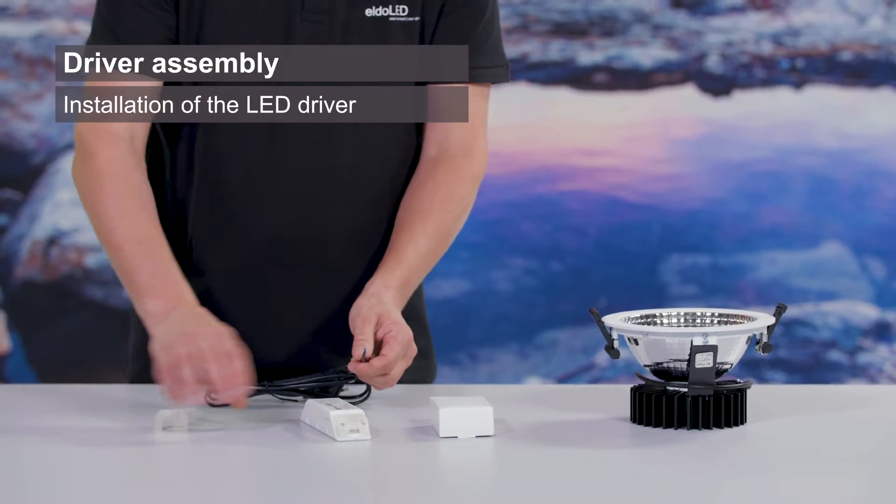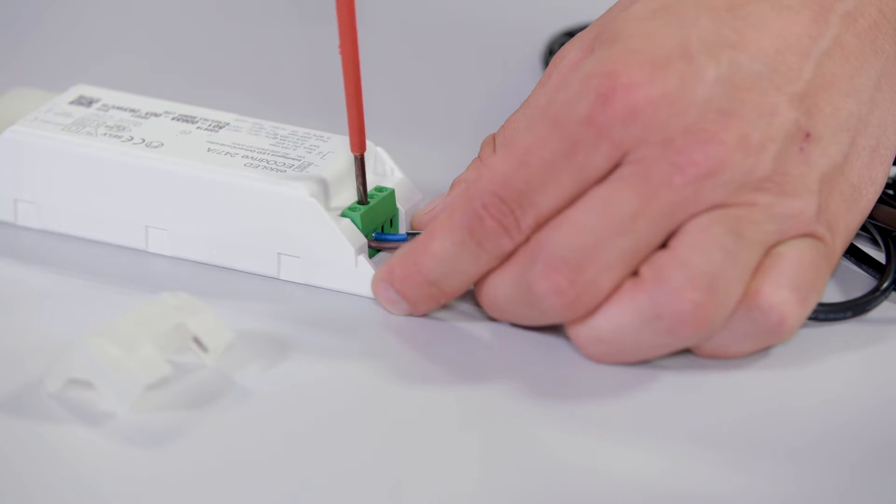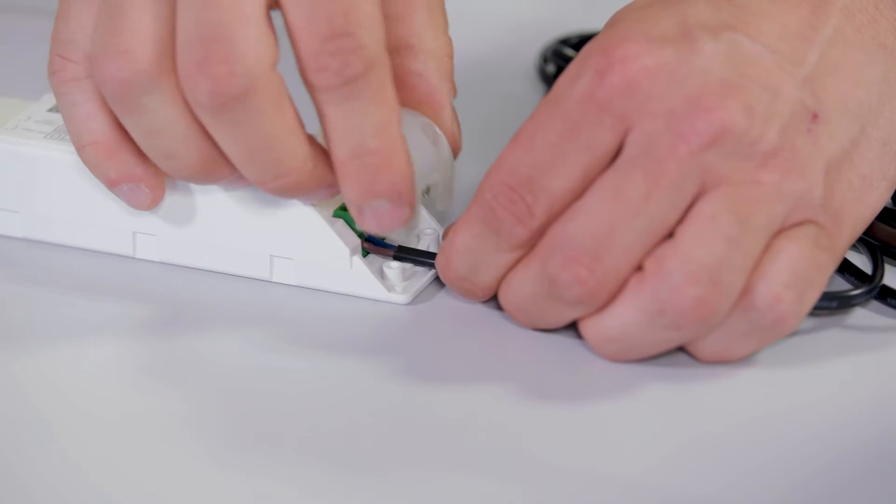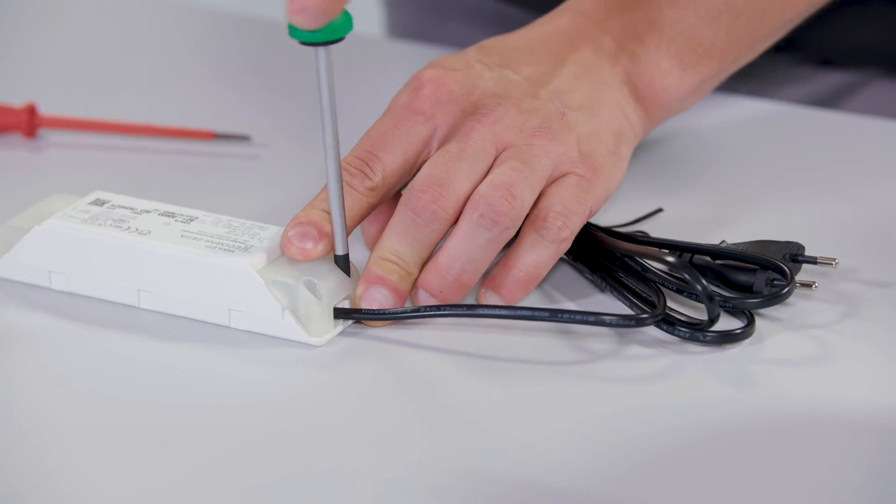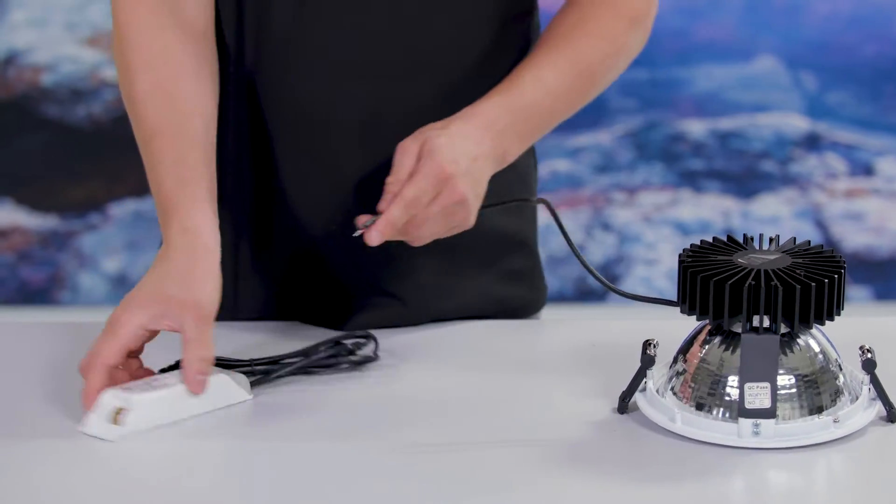Connect the power cable to the LED driver and mount the end cap. Connect the LED wiring of the downlight to the LED driver.